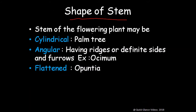Classification based on the shape of the stem: stems of flowering plants may be cylindrical, like palm trees and other trees. They can be angular, having ridges and furrows on the stem — like Osmium. Or they can be flattened — like Opuntia (Indian fig). On the basis of shape, stems can be divided into these three types.